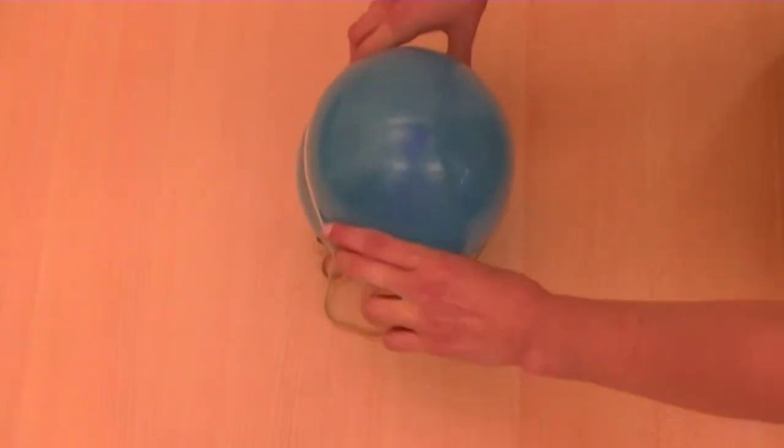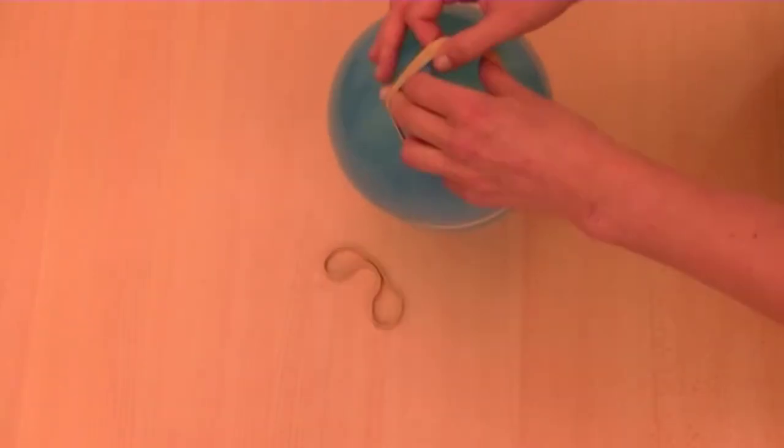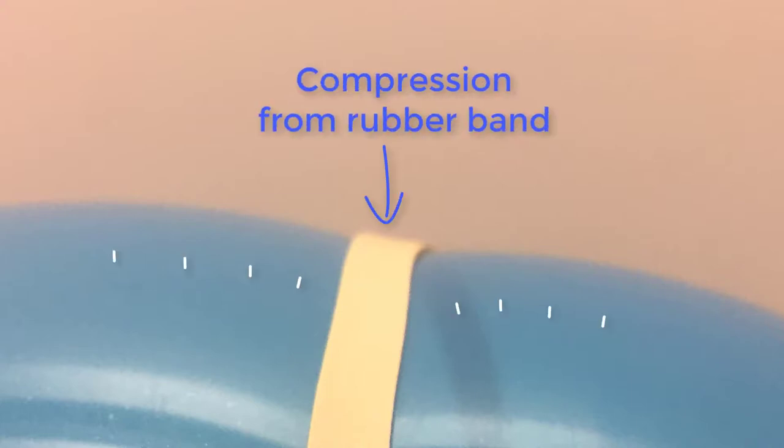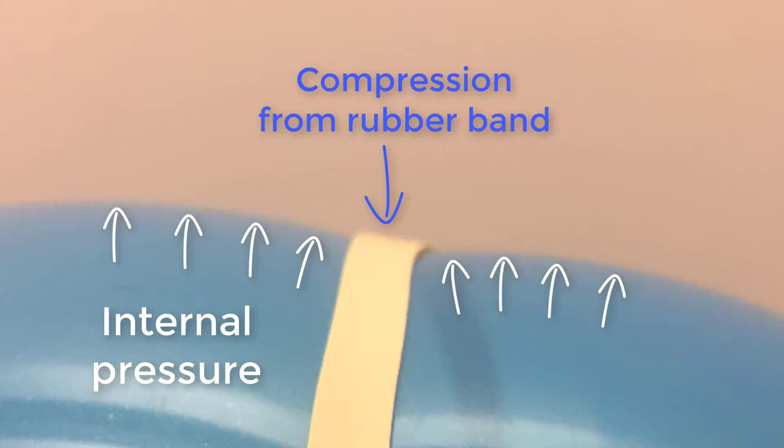When I put two rubber bands over the balloon, you can already see that the bulging is restricted in those areas. Look even more closely. The pillowing effect is quite clear. There's an obvious indentation at the band as the air inside of the balloon redistributes to the non-restricted sections.